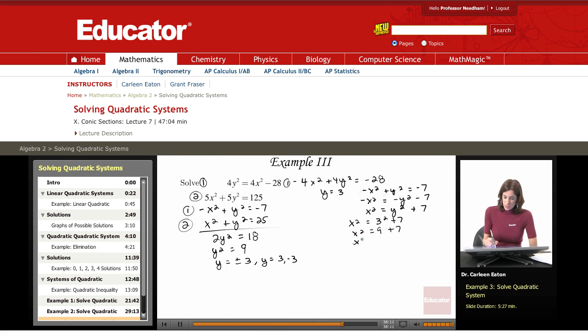So x squared equals 16, which means that x equals plus or minus 4. So x could equal 4. x could equal negative 4 when y is 3.